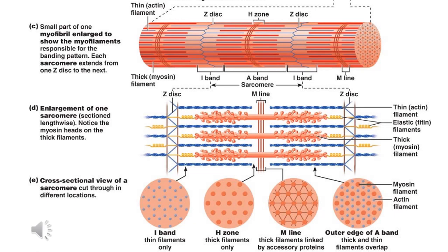In cross-sectional views of the sarcomeric components, the I-band shows only blue thin filaments. The H-zone contains thick filaments only. The M-line shows thick filaments linked by accessory proteins at the middle. The outer edges of the A-band show a mixture and overlap of both thick and thin filaments.